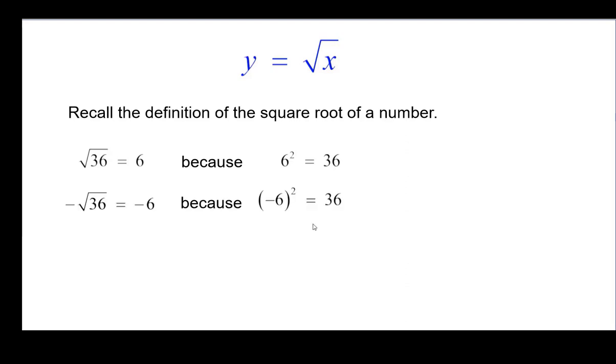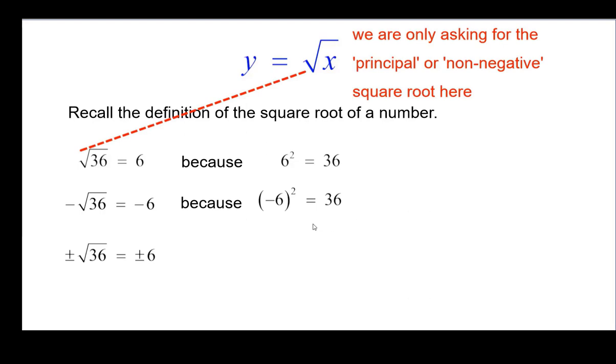The negative square root of 36 is negative 6 because the quantity negative 6 squared is 36. And you can also write plus or minus radical 36 is plus or minus 6. But for our purposes, we're only going to be asking for the principal or non-negative square root here, so all of our answers will be 0 or larger.